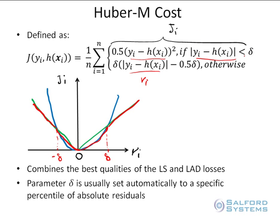If the residual is small — specifically less than delta — then we apply a quadratic penalty, which is the least squares cost. When the residual gets large, we apply an LAD cost — a linear penalty. That is the most important thing to understand here. The Huber cost combines the best qualities of least squares and LAD losses.